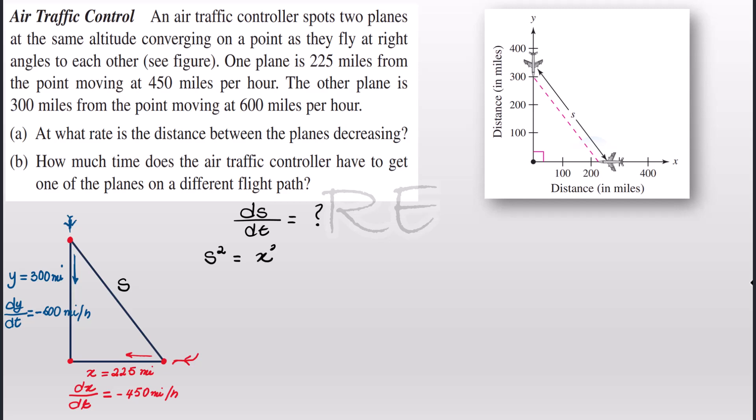According to the model, s is the hypotenuse of the triangle. Therefore s squared is equal to x squared plus y squared.